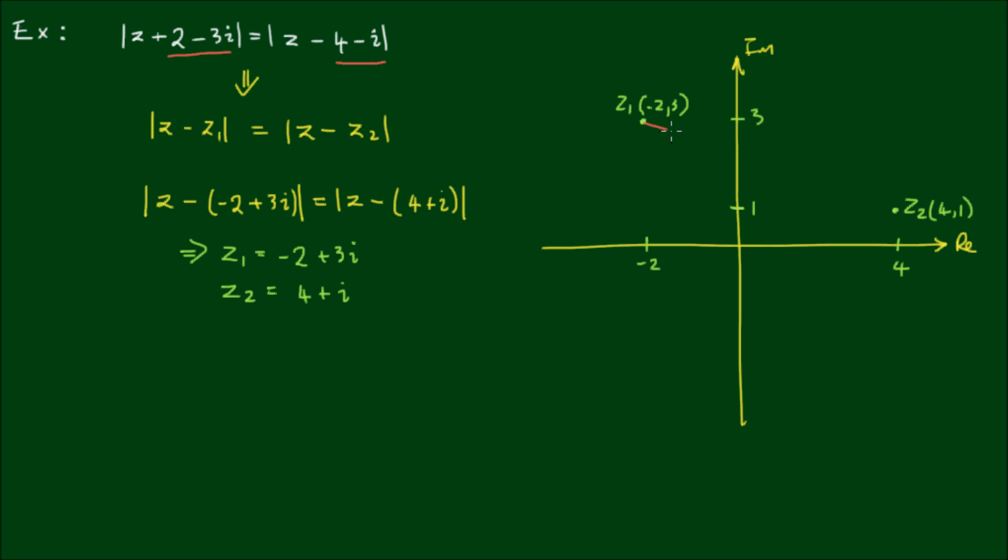And I'll just write the coordinates in: -2, 3, 4, 1. And if I draw a straight line between these two points, then as we found before, the locus will be a straight line that bisects this line and is perpendicular to it.